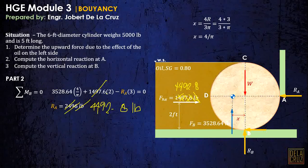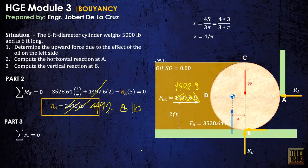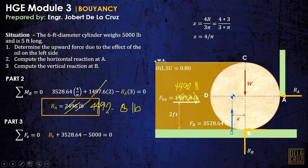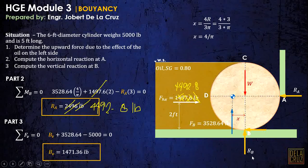For part 3, compute the vertical reaction at B. The vertical reaction VB can be calculated by summation of forces in the vertical direction: VB plus the buoyant force minus the weight of 500 pounds equals zero, giving us the vertical reaction RV at B.